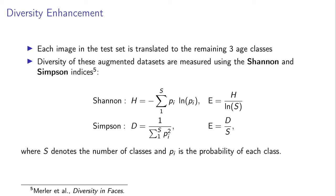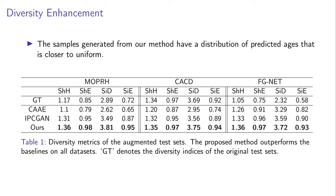Our task is to enhance the diversity of a face dataset with respect to the age attribute. Each image in the test set is translated to each of the remaining three age classes, resulting in an augmented dataset four times the size of the original. To quantify how diverse this synthetic set is, we use an age classifier to predict the age of translated images, and turn to established diversity and evenness indices. Simpson D and Shannon H measure diversity, while Simpson E and Shannon E quantify evenness of the label distribution. Higher values of Simpson D and Shannon H indicate more diversity, while evenness indices closer to one indicate distributions closer to uniform. Table 1 shows results for all three datasets when augmenting using our method and the baseline models.